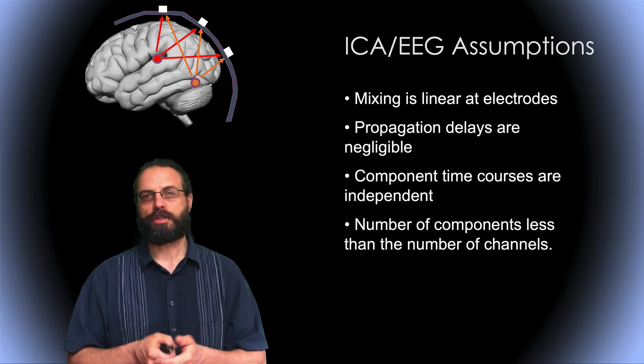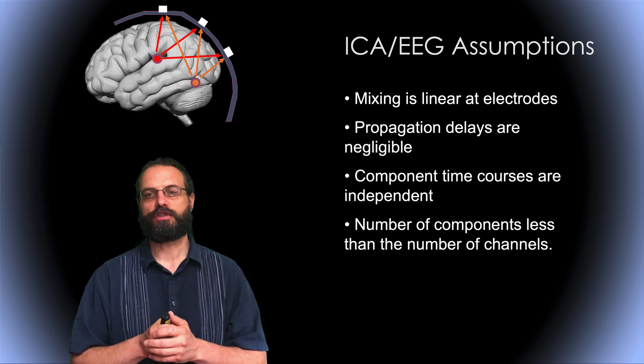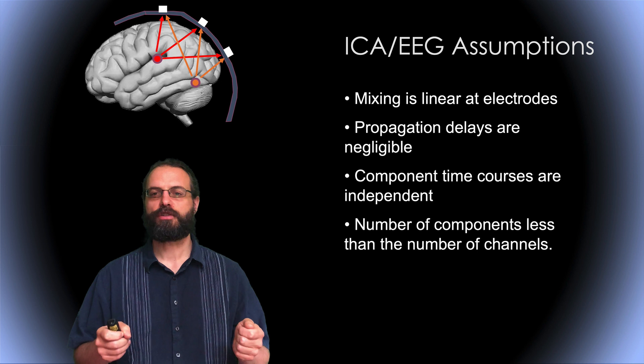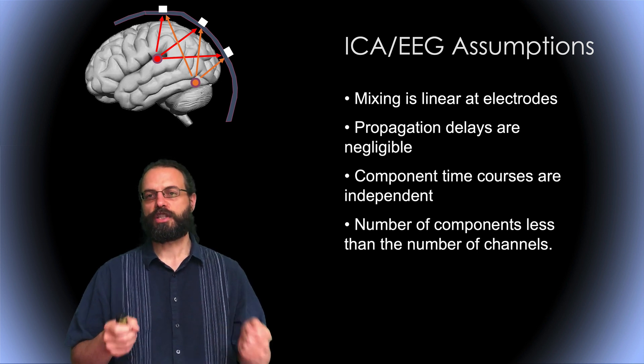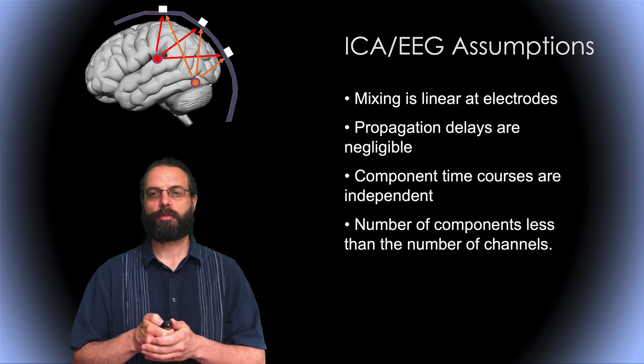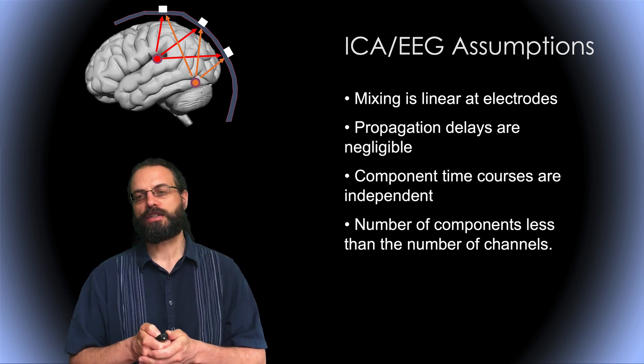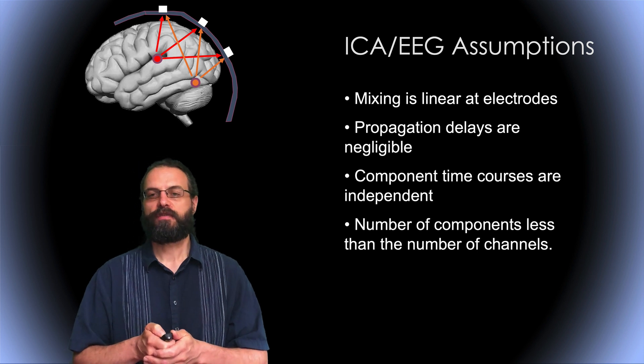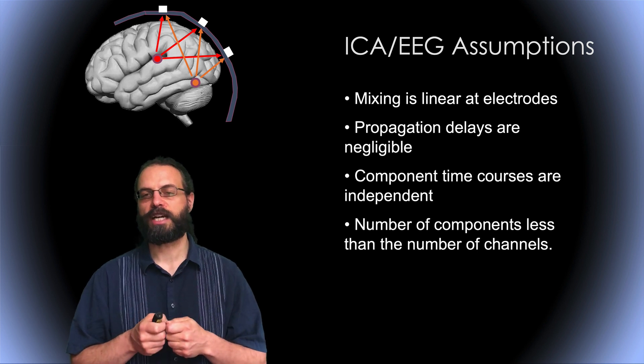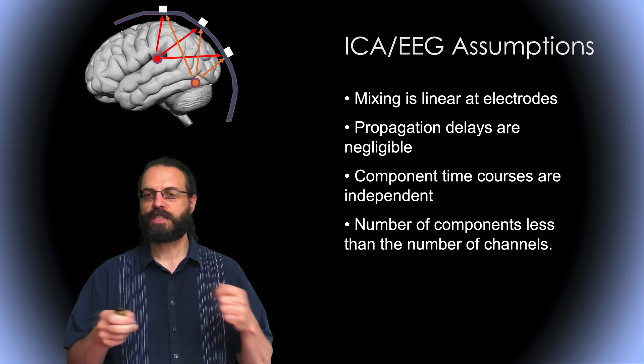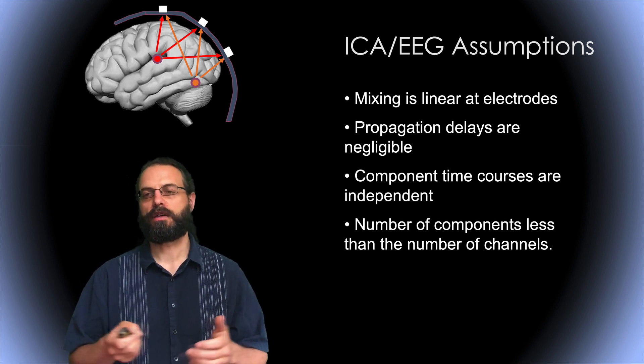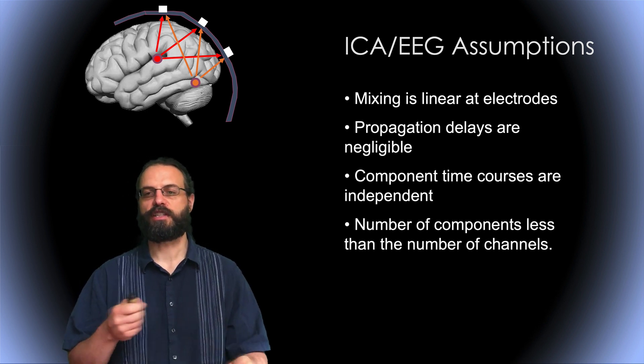There are assumptions when you apply ICA to EEG. First, the mixing is linear at scalp sensors, and this is mostly true based on Maxwell's equations of electrical propagation. Then, the propagation delays are negligible. This is also true in the sense that the propagation delays are close to the speed of light. At the time scale we're interested in, from 1 Hz to 100 or even 1000 Hz, this is really negligible.